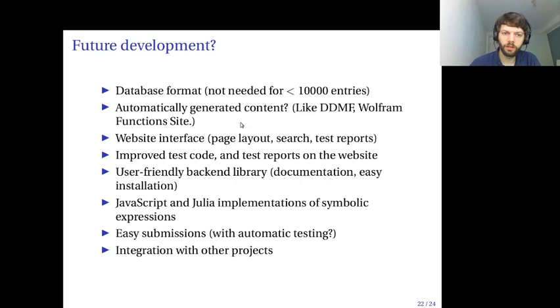It would be interesting to try to automatically generate some more content instead of entering everything by hand. There's a lot of things you could do for the interface on the website and for the backend code. I would like to have implementations not just in Python, but also, for example, in Julia. And I would like to make it easy for other people to contribute, for example, by having an easy way to test formulas so users can easily check that the formula matches the intended semantics of the backend engine.